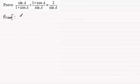So I'm going to copy in the left-hand side. So we've got sin A all divided by 1 plus cos A and then we're adding to this 1 plus cos A all divided by sin A.